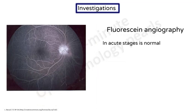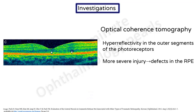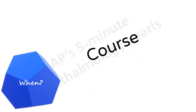Coming to investigations, fluorescein angiography is essentially normal in the acute stages. Optical coherence tomography is a non-contact, non-invasive imaging modality that gives cross-sectional anatomical features of the retina in amazing detail. The OCT shows hyper-reflectivity in the outer segments of the photoreceptors in Berlin's edema — that is where the damage is — and defects in the retinal pigment epithelium may be seen with more severe injury.